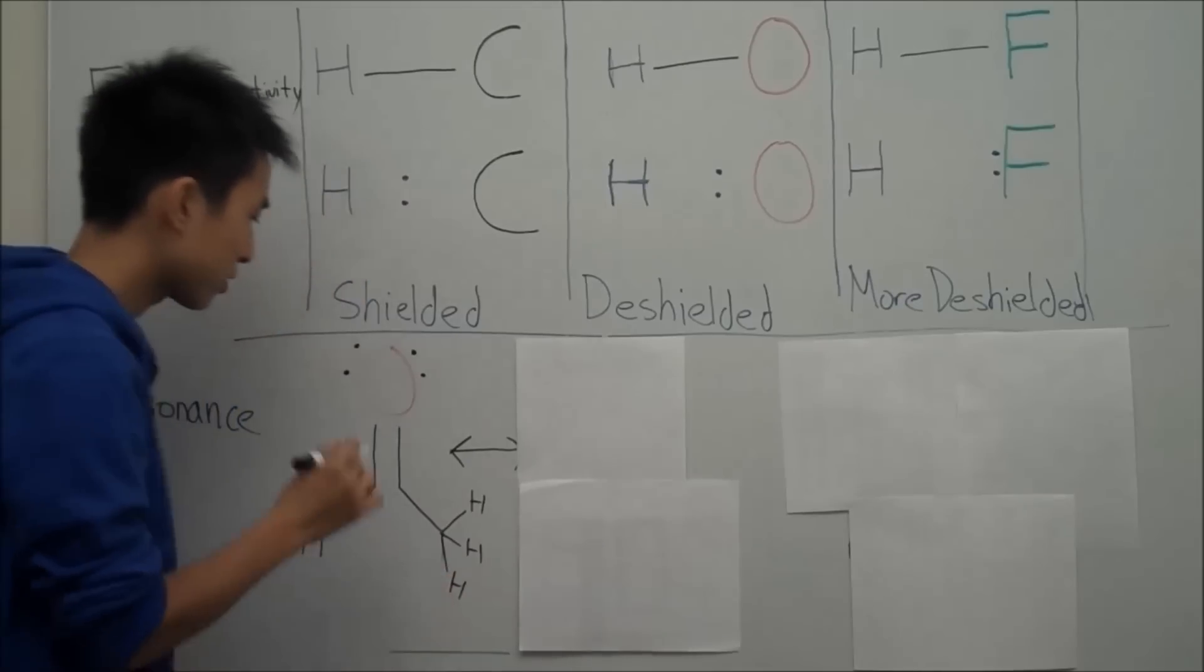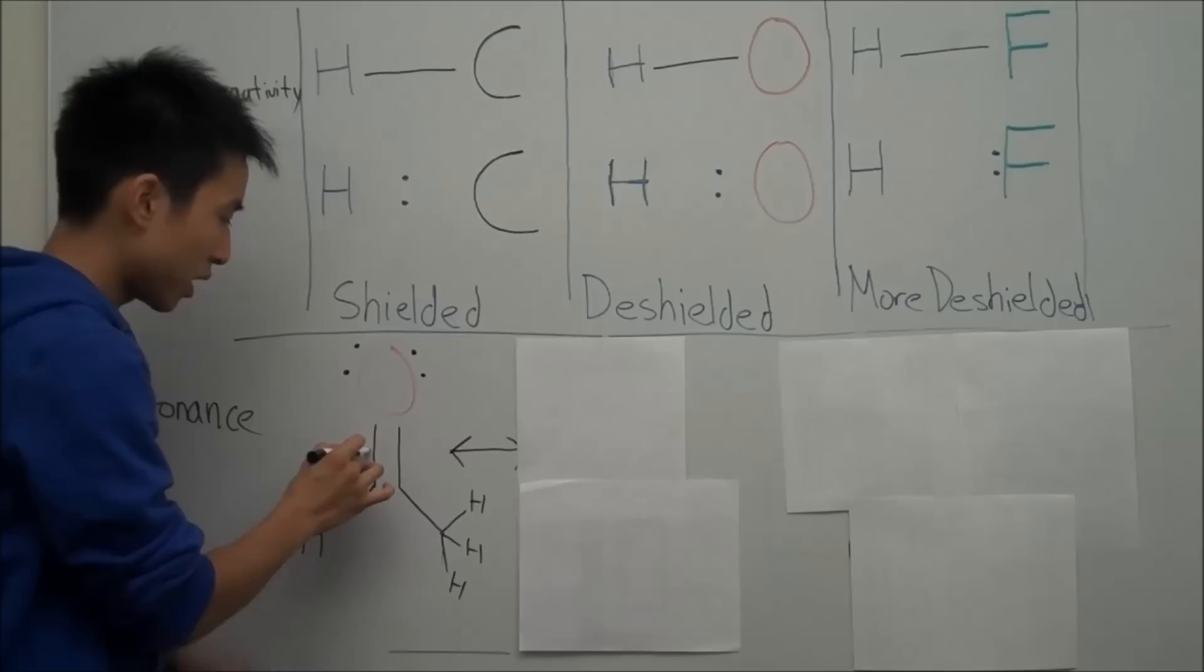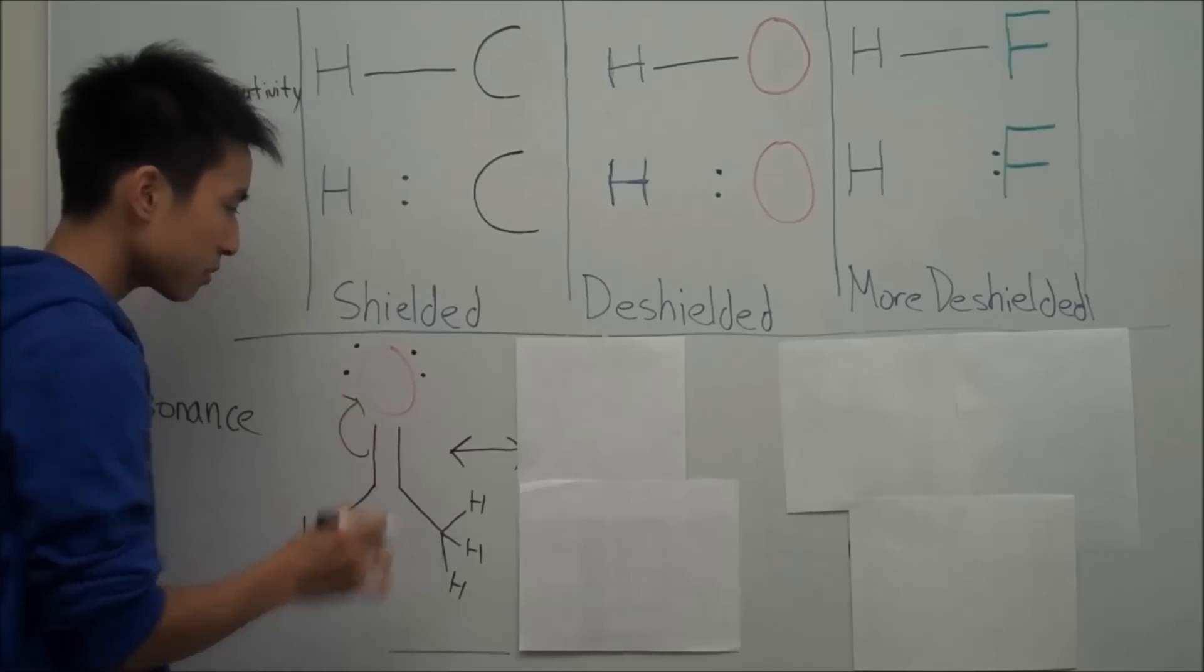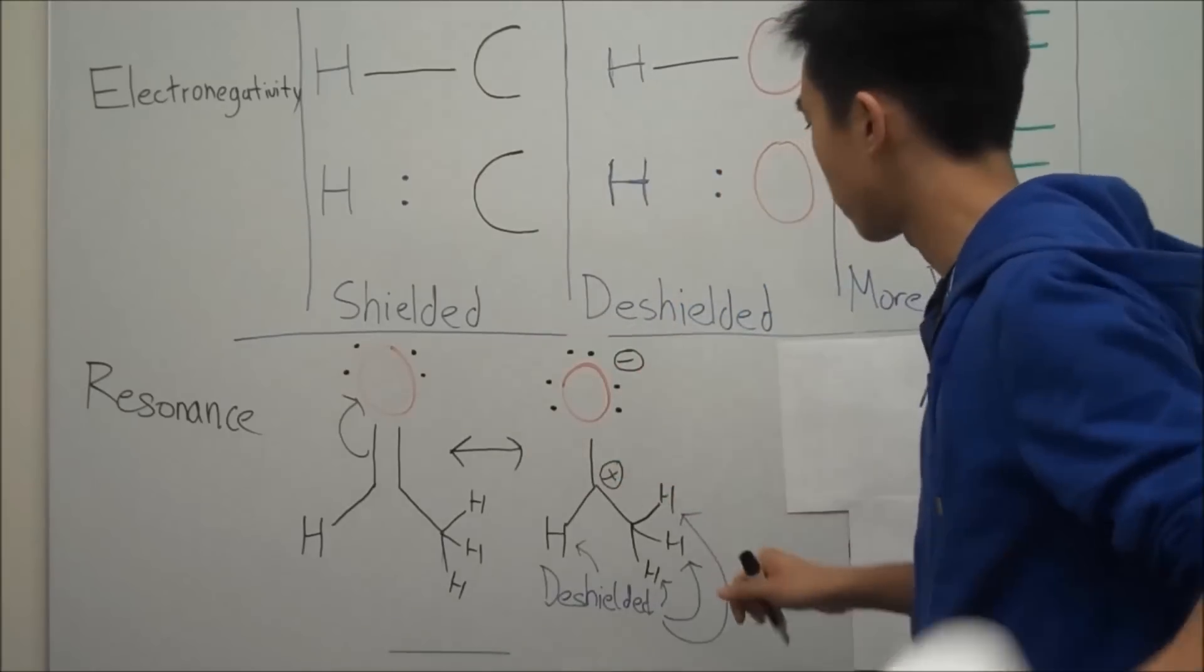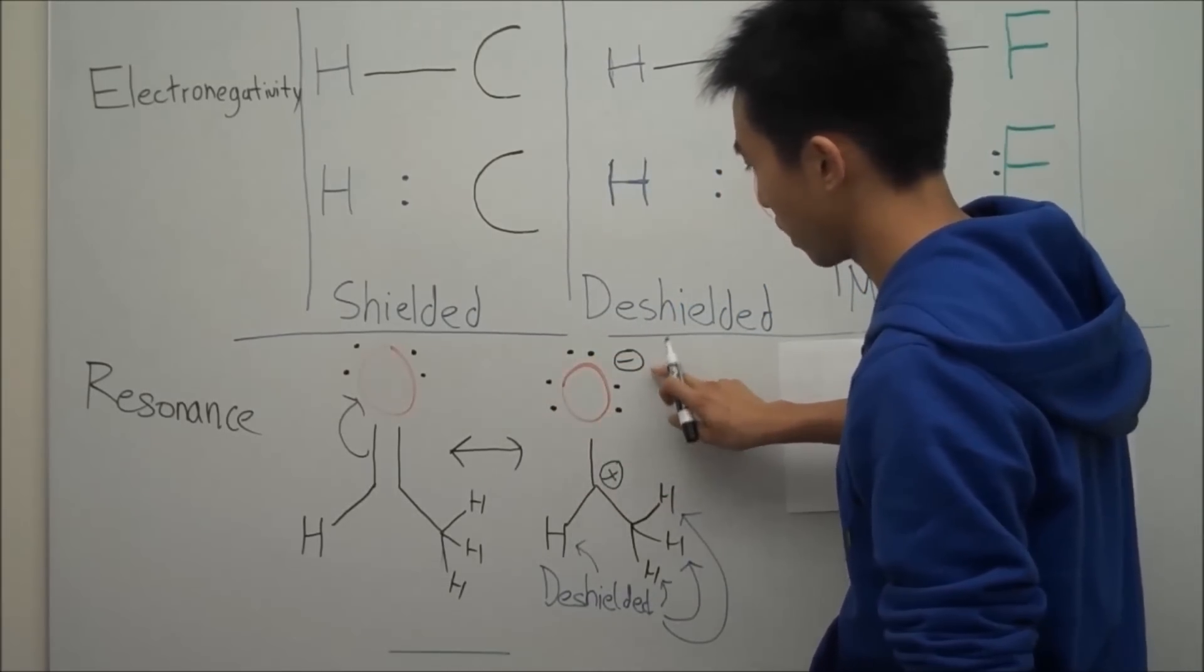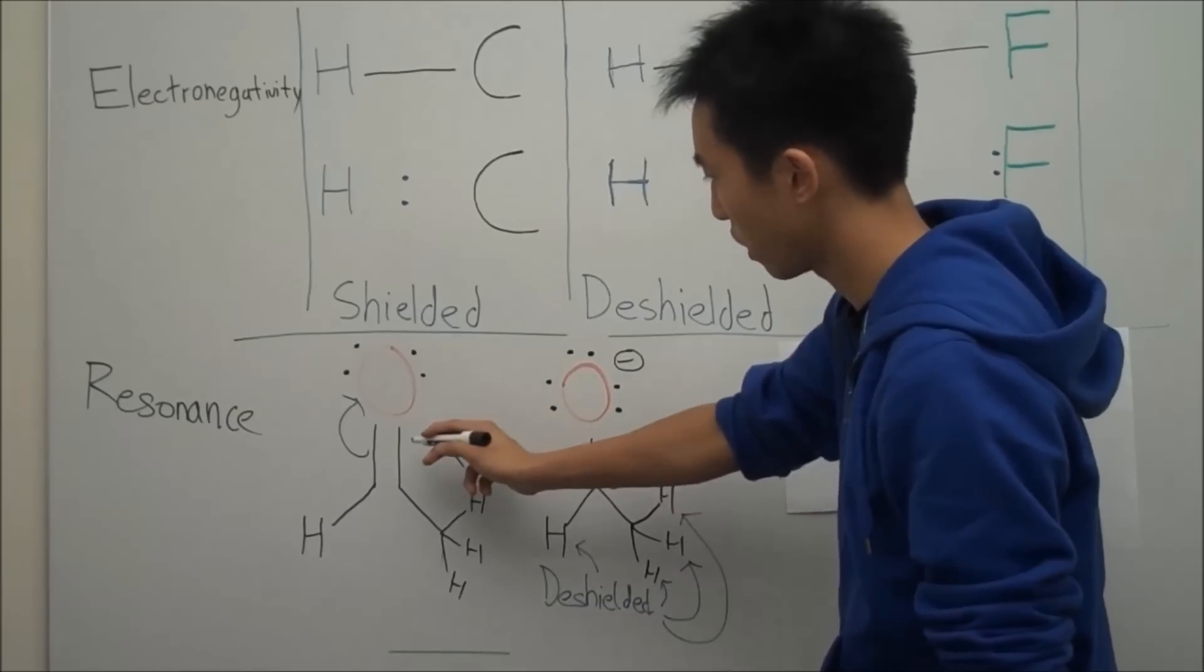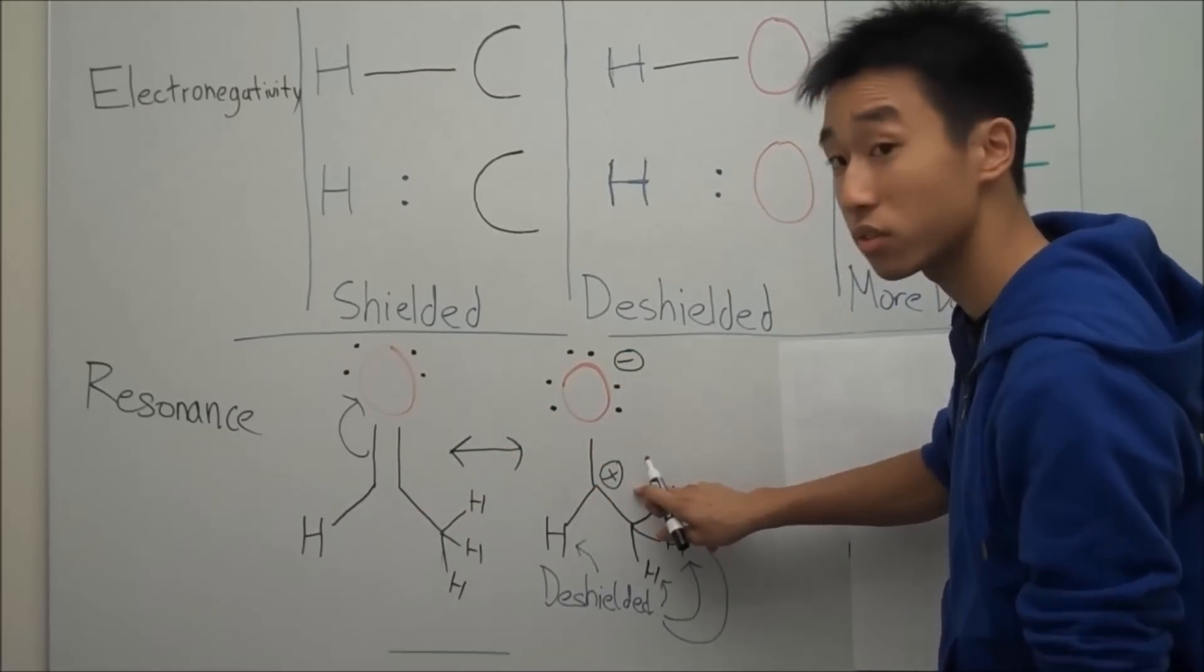All right. Back to the resonance. The pi bond electrons here, they can actually resonate up, causing you to have this resonance structure. The oxygen will now have six valence electrons, giving it a negative charge. And the electrons here left from the carbon and went up to the oxygen. So now the carbon is going to have a positive charge.